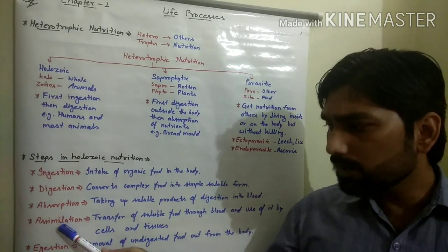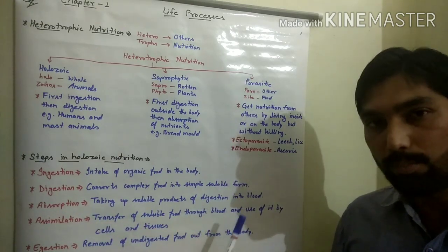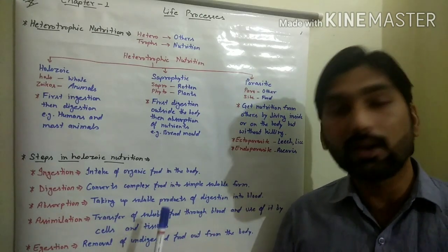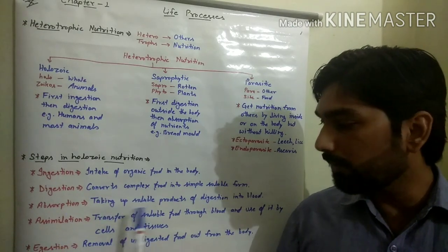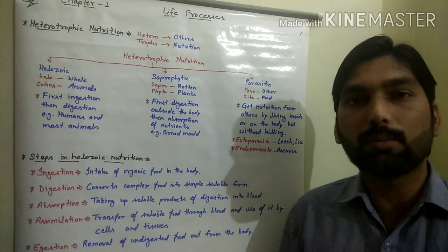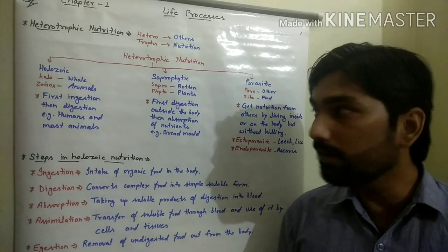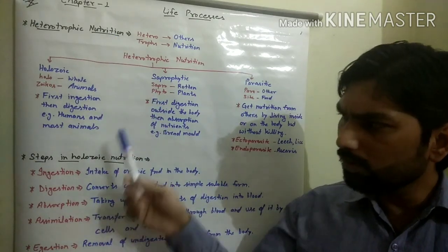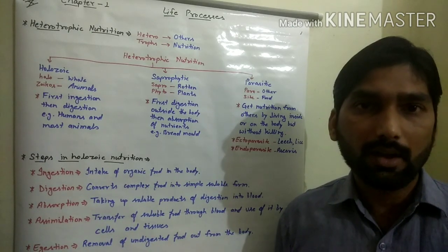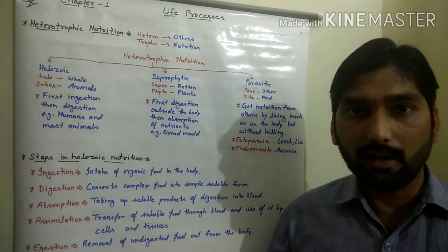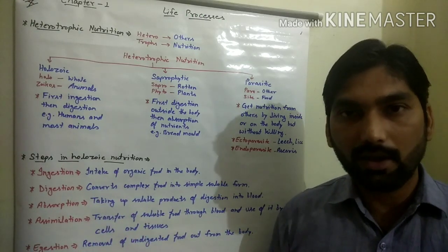The fourth step is assimilation — the transfer of soluble food through the blood and its use by cells and tissues in our body. Finally, egestion is the process of removal of undigested food from the body. After all these steps, the nutrition process is complete. We can conclude that nutrition is a complex process involving various smaller steps before the body obtains its nutrition.